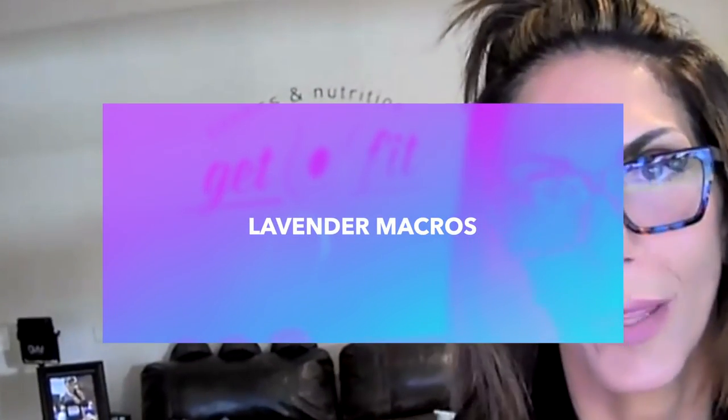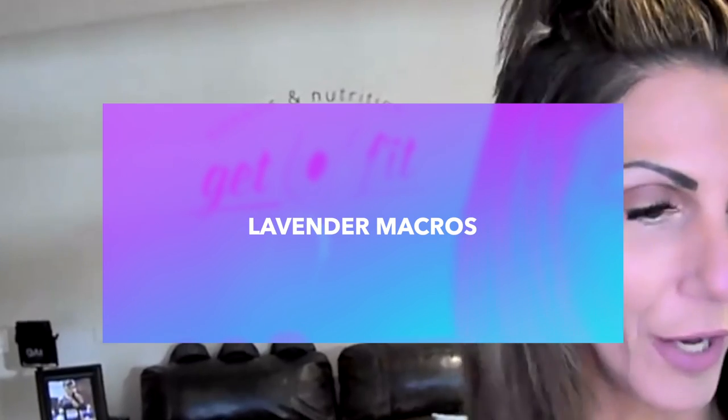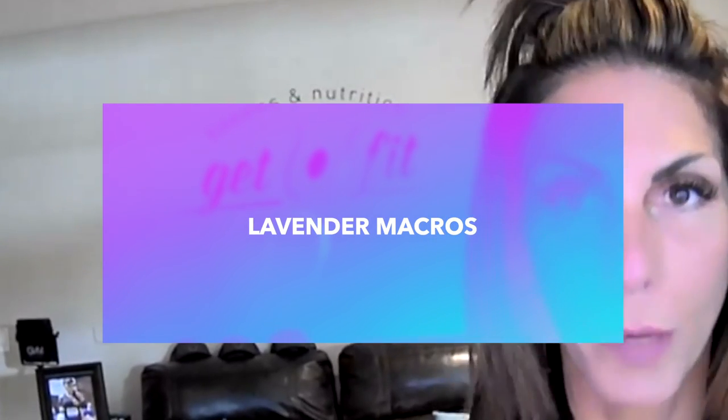I'm going to show you the principles behind the lavender paint theory. Protein is represented by red, carbs are represented by blue, and fats are represented by white. In order to hit your macros for each meal, you want to make sure that you have all three of those together — and all three mixed together is going to give you lavender. If you're missing one of those, you won't get lavender, and the key is to have lavender.